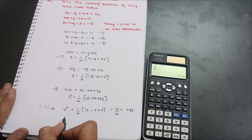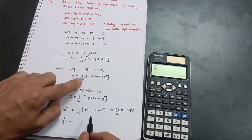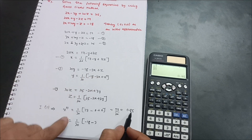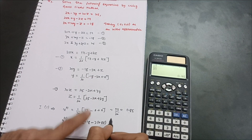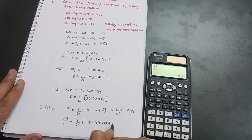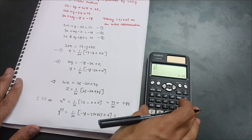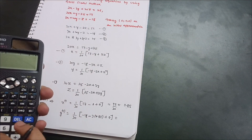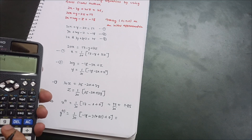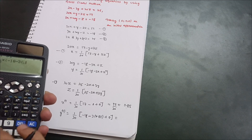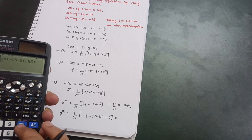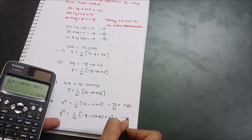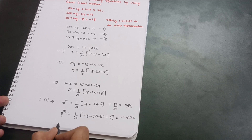Next, y1: using equation 2, y1 = (1/20)(−18 − 3x + z). Now substitute the updated x1 = 0.85 and z = 0 (initial condition): y1 = (1/20)(−18 − 3×0.85 + 0) = (1/20)(−18 − 2.55) = −1.0275. So y1 = −1.0275.